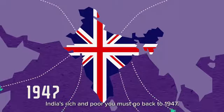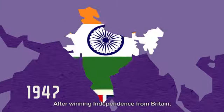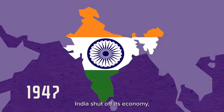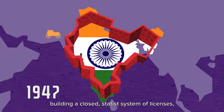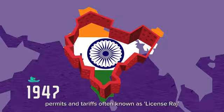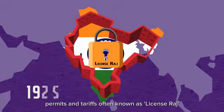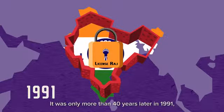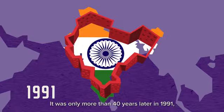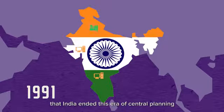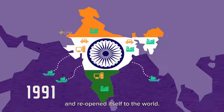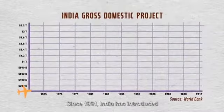To understand this huge gap between India's rich and poor, you must go back to 1947. After winning independence from Britain, India shut off its economy, building a closed statist system of license permits and tariffs, often known as License Raj. It was only more than 40 years later, in 1991, that India ended this era of central planning and reopened itself to the world.